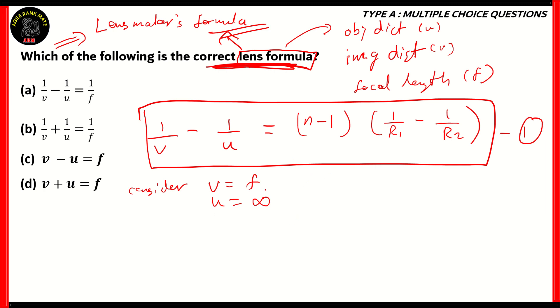So, when we consider V as F, then U has to be infinity, and vice versa. So, when we apply V = F and U = infinity, we get 1/V as 1/F, and 1/U as 1/infinity, which is basically 0. So, what we're getting is 1/F - 0 = (N-1) times (1/R1 - 1/R2). This is our equation 2.